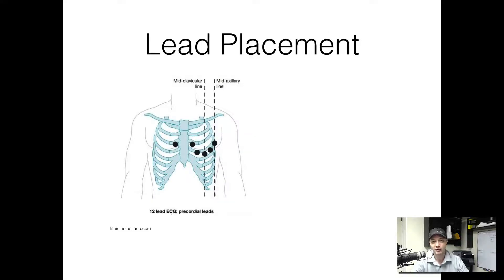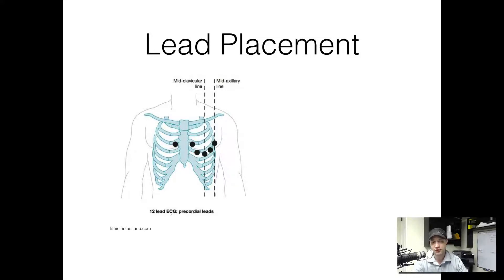When you have a patient that requires an EKG, it's important that you place the leads properly because the different leads look at different parts of the heart. You're going to place V1 and V2 over the third rib to either side of the sternum, to the lateral sides of the sternum. After you place V1 and V2, you're going to want to place V4 to the area of the 5th intercostal space at the midclavicular line. Once you've placed that, then you're going to take V3 and place that in between V2 and V4. It seems somewhat counterintuitive to place V3 after you place V4, but it's important to get the placement correct.